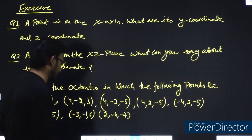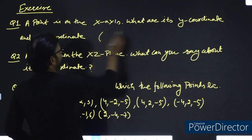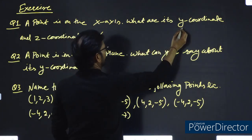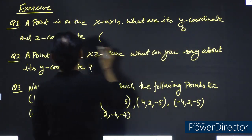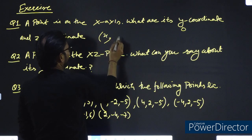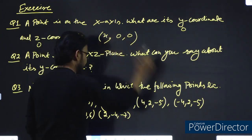The answer is 0. So the y-coordinate will be 0, and z will also be 0. What will x be? And y and z will both be 0.